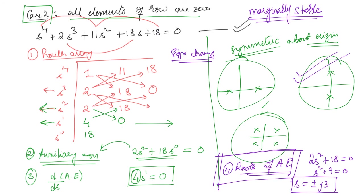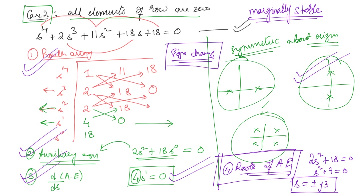In summary for Case 2: construct the Routh array, form the auxiliary equation from the row just above the all-zero row, differentiate it, and use the derivative's coefficients to replace the zero row. Complete the Routh array and check for sign changes. If there are sign changes the system is unstable. If there are no sign changes, further check the roots of the auxiliary equation to determine whether the system is marginally stable or unstable.